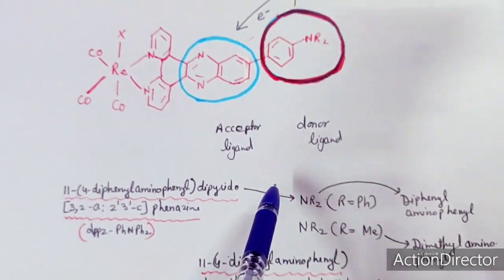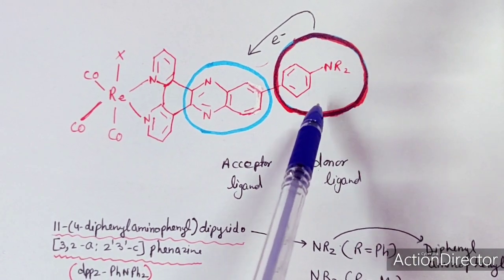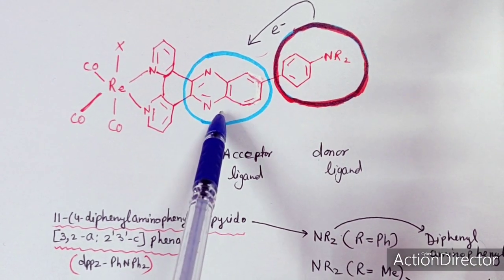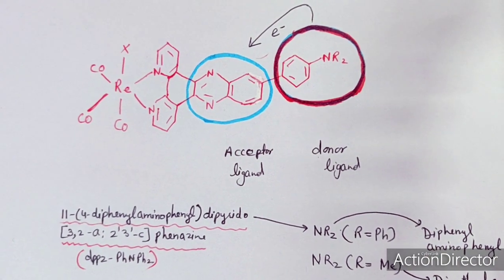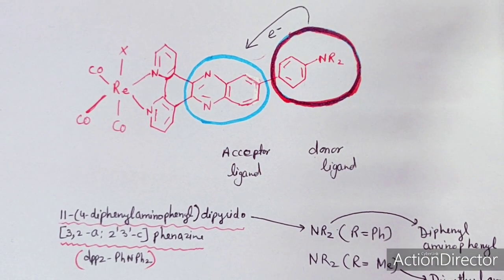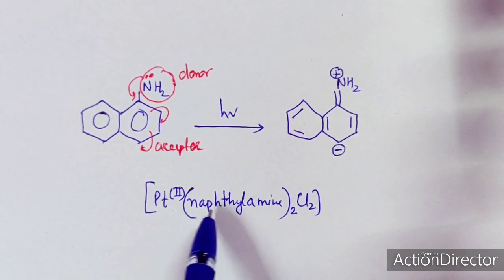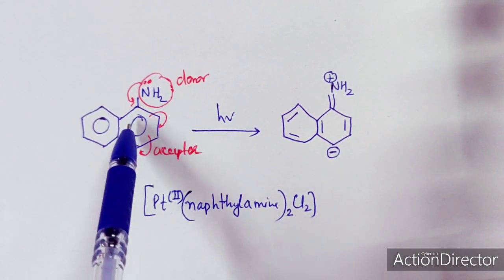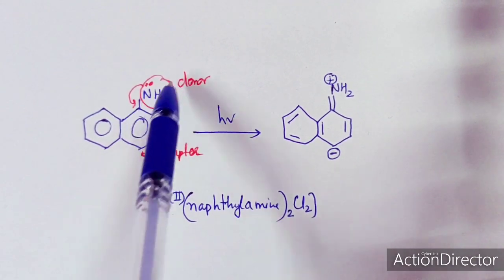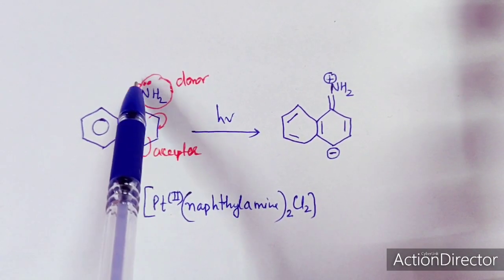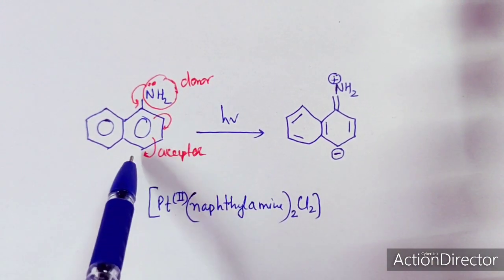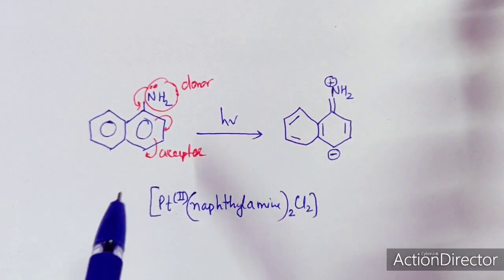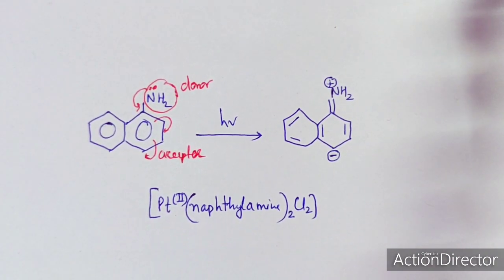The color of these rhenium complexes is due to intra-ligand charge transfer from the donor to the acceptor part of the ligand. One more example is a platinum complex featuring naphthalamine as the ligand. In this ligand, the lone pair of electrons on the nitrogen atom is donated to the aromatic ring, making the aromatic ring the acceptor and the nitrogen part the donor — the color of this complex arises from intra-ligand charge transfer.